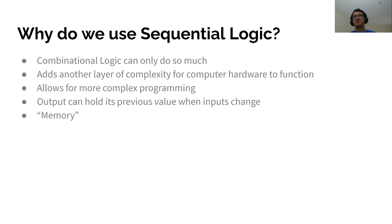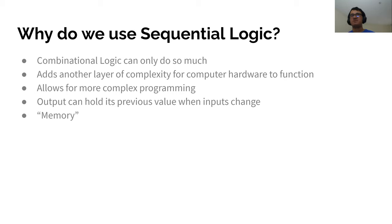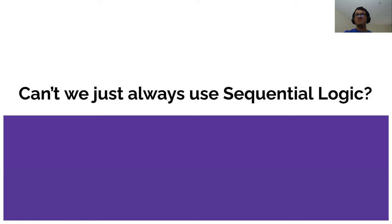Looking at a sample circuit — what might this do? Answers in chat include 'add,' 'a counter,' and 'plus equals operation' — all pretty good. This is basically a plus-one circuit: it takes the input N (the output of the previous register) and adds one, changing the value of N at the positive edge of a clock cycle. We use sequential logic because combinational logic can only do so much — sequential logic creates another layer of complexity, allowing for more complex programming since we can hold our previous value. This is essentially memory.